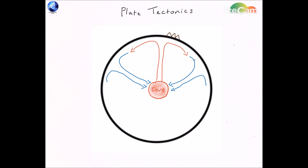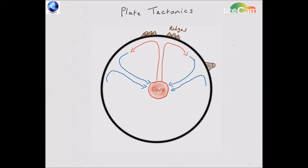The friction will obviously pull these plates in the same direction as those convection currents are moving. Now, as these move away from the superheated area, they become progressively cooler. And as you can see, they are losing their heat and they begin to sink back down to the core. So you get this notion of a cycle, convection currents that are operating this large cycle.